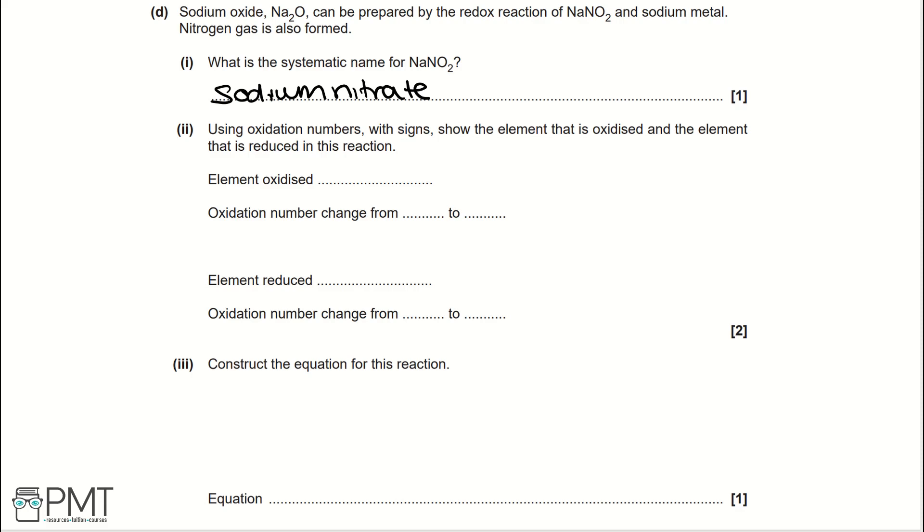Then, using oxidation numbers with signs, show the element that's oxidised and the element that's reduced in this reaction for part 2. If we start by writing an equation, we would get that NaNO₂ and sodium form Na₂O and nitrogen gas. We don't need to balance it for oxidation numbers because the stoichiometry does not impact oxidation numbers. But, if we add oxidation numbers to each of these compounds, if we start by looking at the individual elements, if it's on its own, it's going to equal 0.